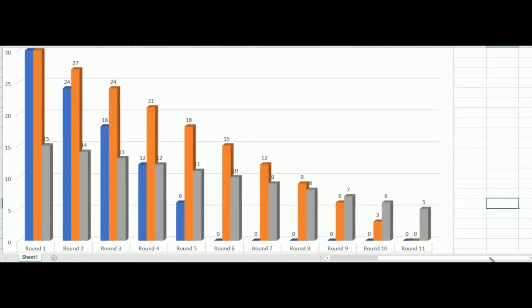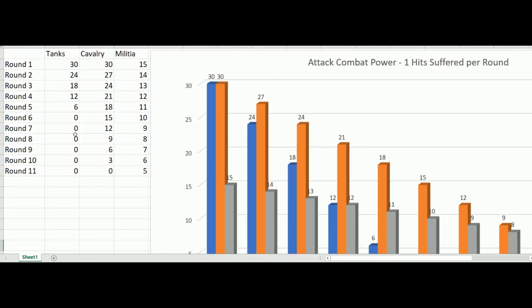So this is a table here — an Excel spreadsheet. Here we have some values for a mythical combat occurring. You have a certain number of tanks, cavalry, and militia. Each tank is attacking here, rolling a dice 12 and succeeding on a roll of six. So if you have five tanks, that's five times six giving you a combat power of 30. Each tank is trying to roll six or less, so the combat power is 30.